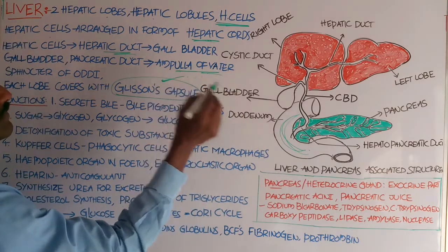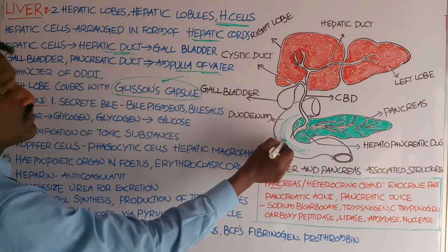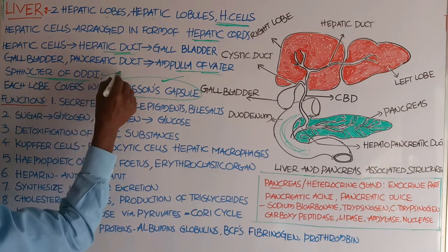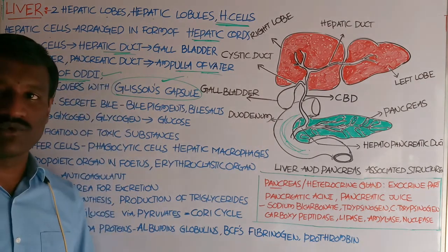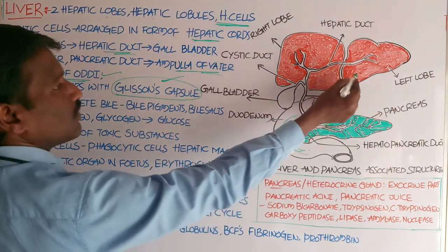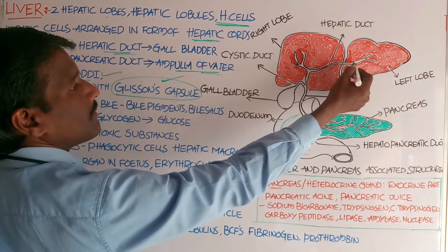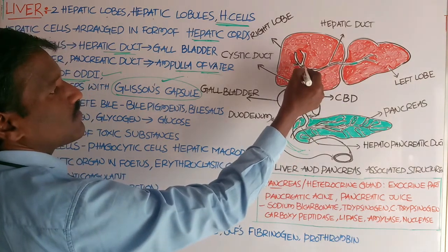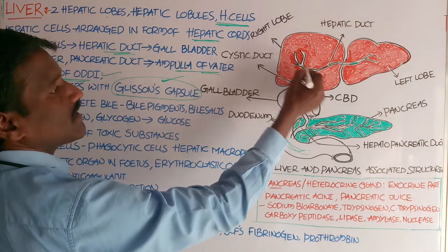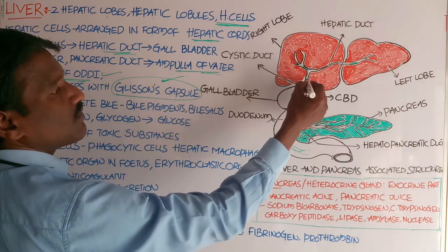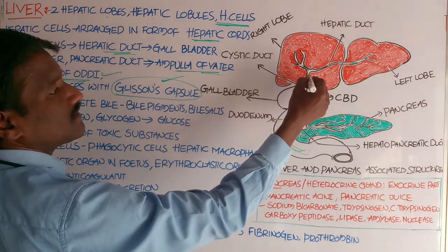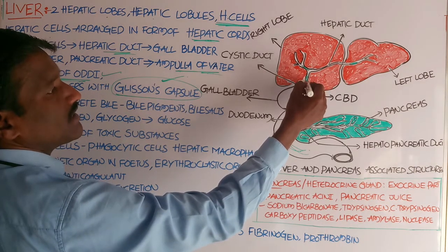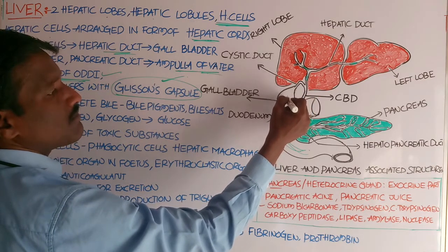The opening into the U-shaped duodenum consists of a sphincter called the sphincter of Vater. The left lobe connects with the left hepatic duct, and the right lobe forms the right hepatic duct. Both ducts combine to form a single common hepatic duct, which opens into the gallbladder.